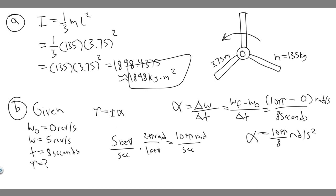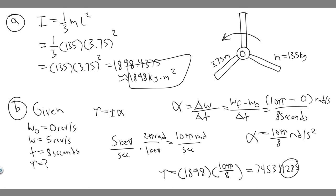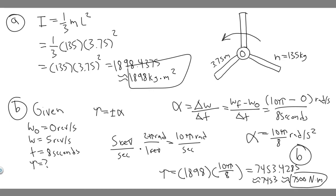Now we have angular acceleration and inertia, so we can solve for torque. Torque = I × α = 1,898 × (10π/8). If you calculate 1898 times 10π over 8, you get approximately 7,453 N·m. You can round however your teacher prefers — 7,453 or 7,500 newton meters. The units are newton meters. So the answer to Part B is approximately 7,500 newton meters, and Part A is 1,898 kilogram meters squared.